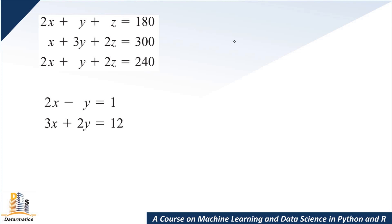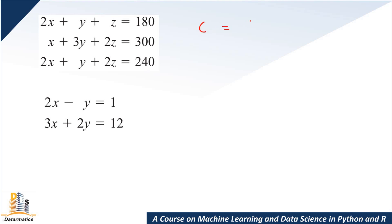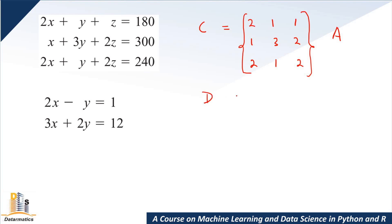So the first thing I'd like to do at this point — I'm going to call the new matrices C and D. So let me take a pen. C is equal to: the coefficients of x, y, and z. Here we have 2, 1, 1 for the first row; 1, 3, 2 for the second row; and 2, 1, 2 for the third row. Alright, so this is our first matrix — matrix A. These are matrix C, and the second matrix D has the right-hand side values.